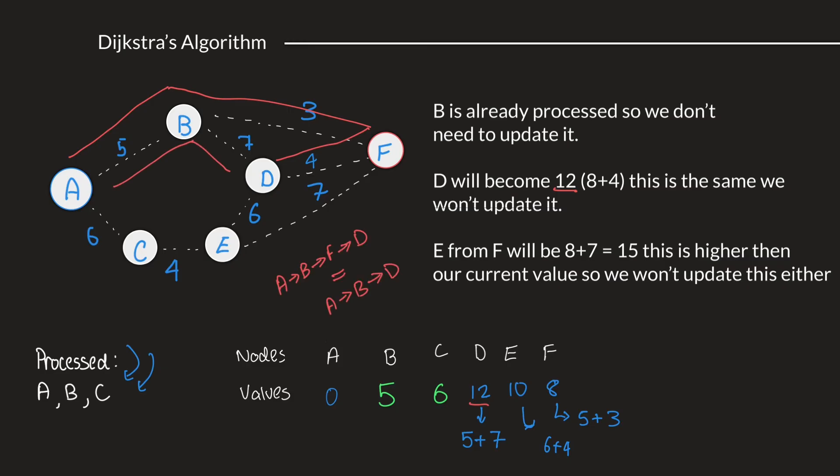Now, if you take the path from A, B, and B to F, and then F to E, that would give us 5 plus 3, 8 plus 7, 15. The value we currently have for E is 10. So, this value is a smaller value than what we are currently calculating. So, we won't update the value of E as we already have the smallest value right now.